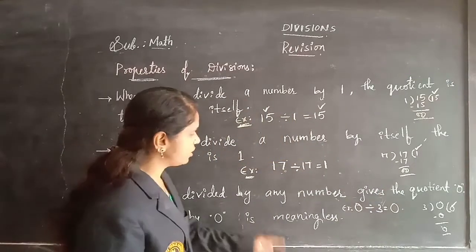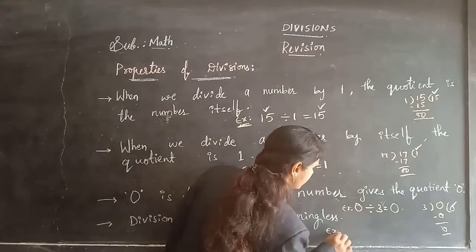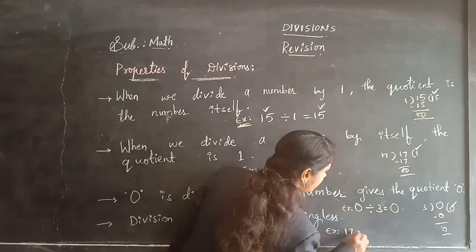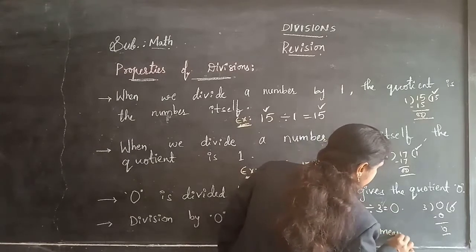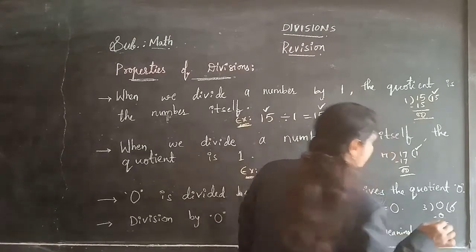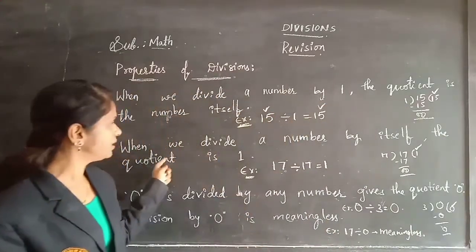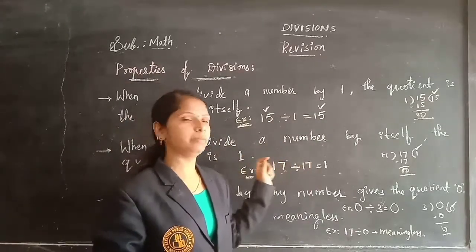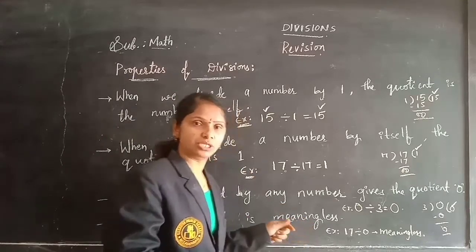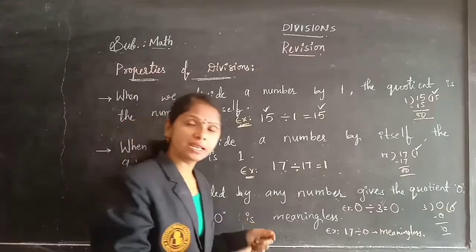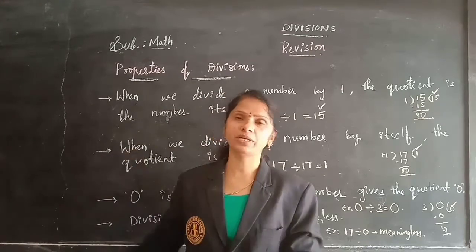And the last point: division by 0 is meaningless. Any number when you are dividing by 0 — for example 17 divided by 0 — it is meaningless. To summarize: any number divided by 1, the quotient is the number itself; divided by itself, quotient is 1; 0 divided by any number gives 0; and any number divided by 0 is meaningless. These are the properties of divisions.